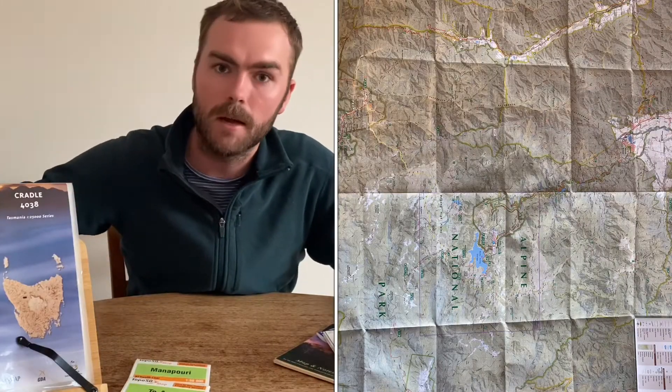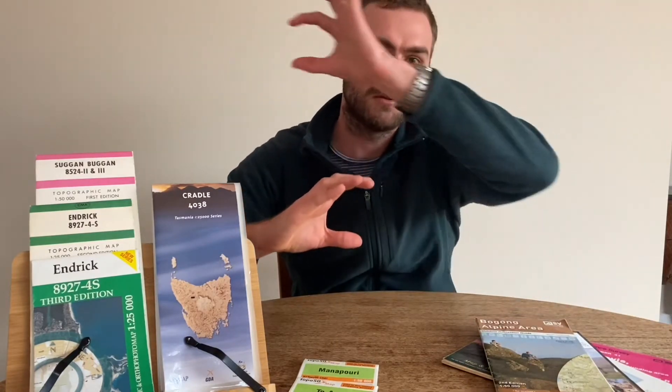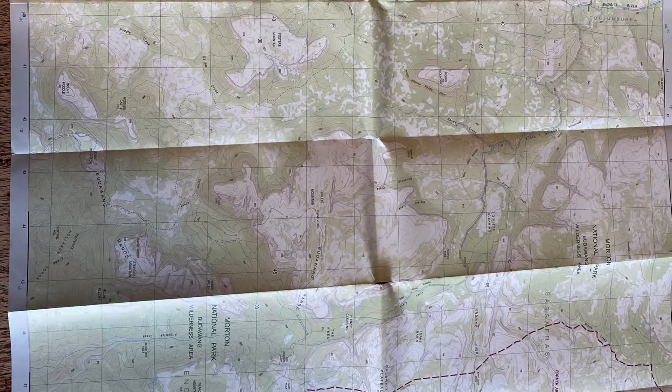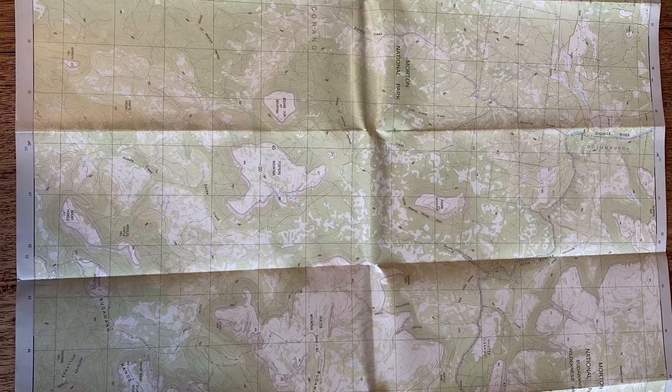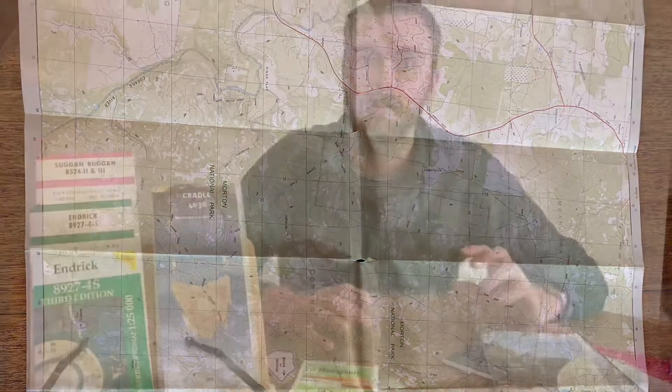When we look at the state government maps, they cover the entire state by applying a grid overlay. That means you might end up using one whole map in the center but then little portions of other maps around the outside of the area you're adventuring in. That can mean you need to buy an entire map just for a couple of square kilometers of information you actually need.